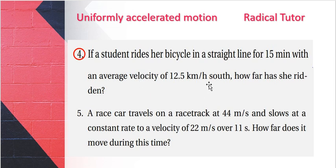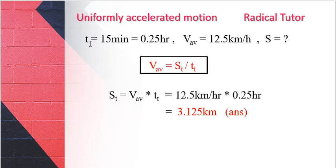So if she rides her bicycle in a straight line for 15 minutes with an average velocity of 12.5 kilometers per hour south, how far has she ridden? Time is 15 minutes, average speed is 12.5 kilometers per hour south. We have to convert this unit to hours. 15 minutes equals 0.25 hours.